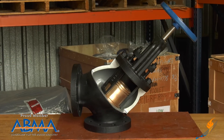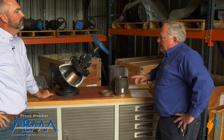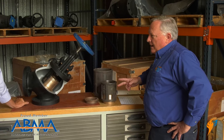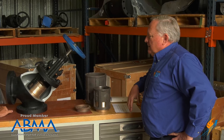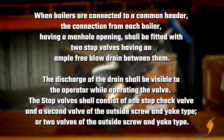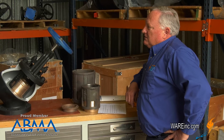They can be required by the ASME Section 1 code, and they're commonly called by two different names: one is a non-return valve, the other is referred to as a stop check valve. The boiler folks tend to call them non-return valves. The ASME code states that when boilers are connected to a common header, the connection from each boiler having a manhole opening shall be fitted with two stop valves having an ample free-blow drain between them. The discharge of the drain shall be visible to the operator while operating the valve. The stop valve shall consist of one stop check valve and a second valve of an outside screw and yoke type, or two valves of the outside screw and yoke type.